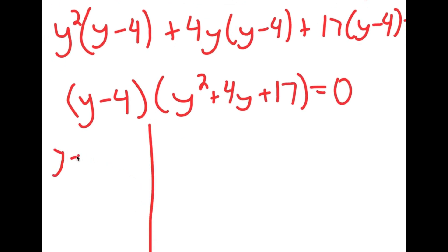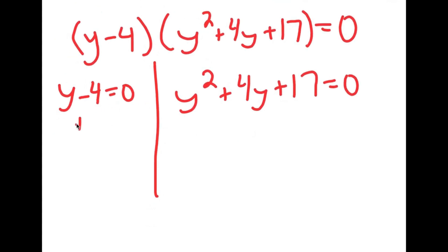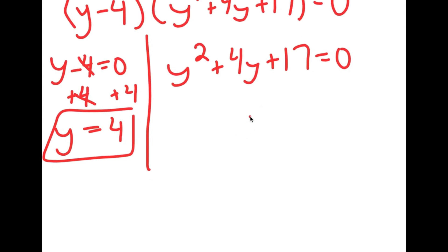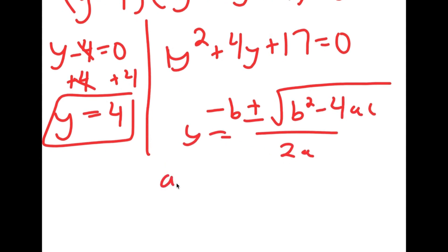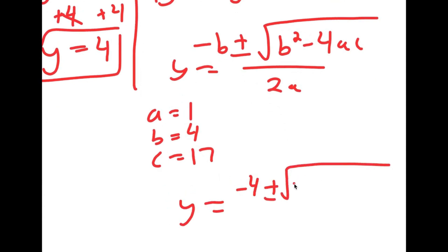This gives me two equations: y minus 4 is equal to 0, and y squared plus 4y plus 17 is equal to 0. For y minus 4 equals 0, add 4 on both sides and I get y equals 4. For y squared plus 4y plus 17 equals 0, I can solve this using the quadratic formula, which is negative b plus or minus the square root of b squared minus 4ac over 2a. In this case a is 1, b is 4, and c is 17, so I get y is equal to negative 4 plus or minus the square root of 4 squared — which is 16 — minus 4 times 1 times 17, all over 2 times 1.